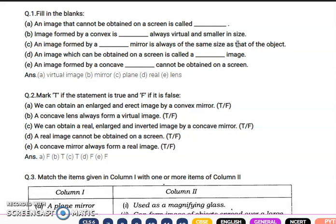An image which can be obtained on a screen is called a real image, and an image formed by a concave mirror cannot be obtained on a screen.